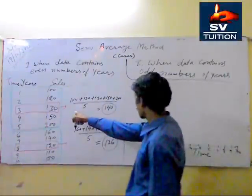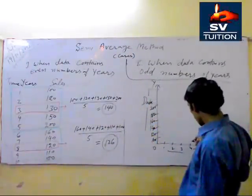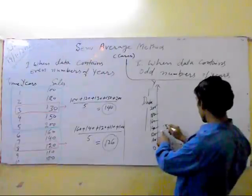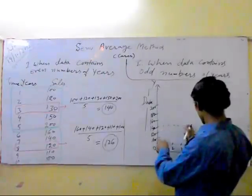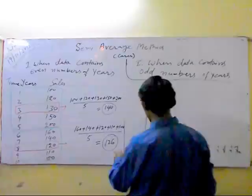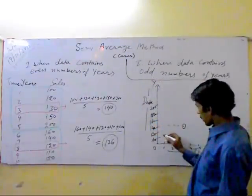In the third year, 140 is the semi-mean 140. The third year. And in the eighth year, 126.